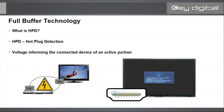Hot plug detection is voltage that informs the connected device that it has a live partner at the other end of the cable. The TV turns on, it provides hot plug to the source, and the source should complete that hot plug loop informing the display it also has a live partner. Without that, you may end up with no signal at all — the DVD player may look on but not output any signal if it's not receiving hot plug.